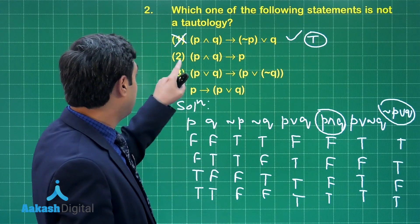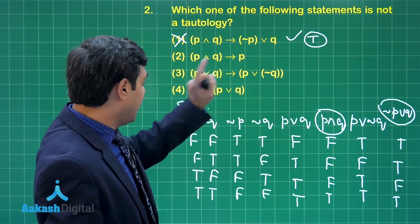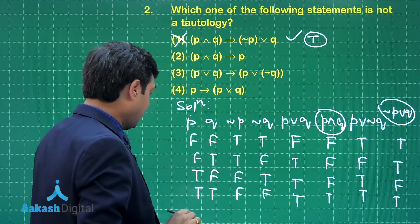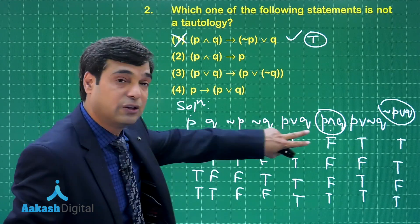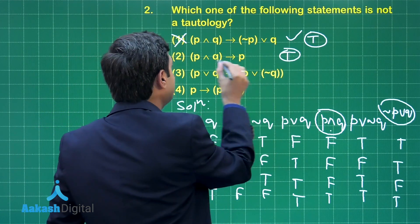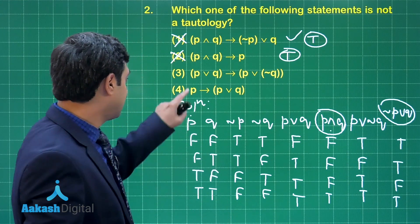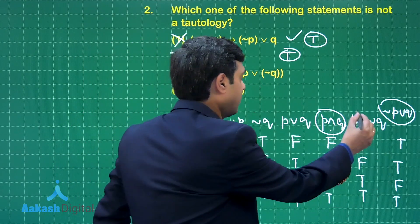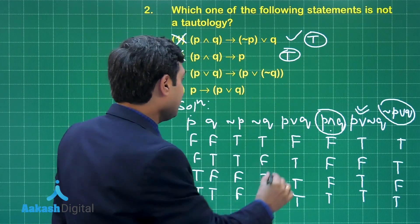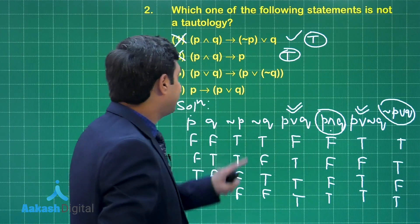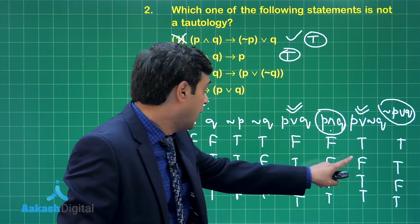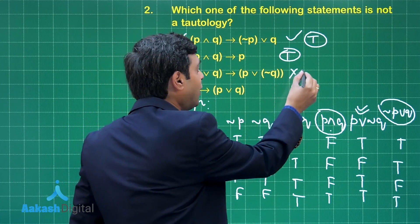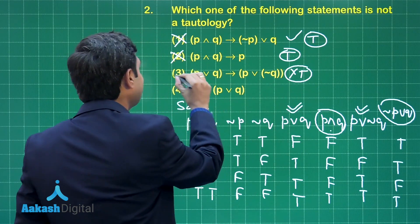Next: if (p and q) then p — the second column has two F's but the combined if-then is never false, so this is also a tautology, not our answer. Next: (p or q) then (p or negation q). Taking these two columns, the second part has a false value where the first part is true, so this is definitely NOT a tautology — this is our correct option.